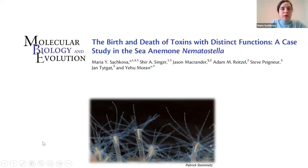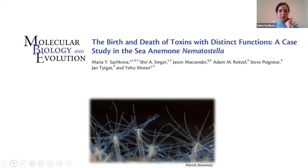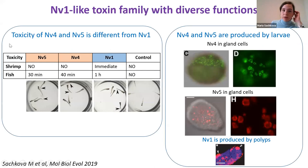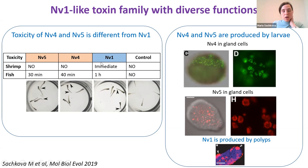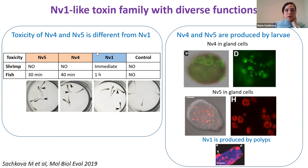I will now talk about several projects I did during my postdoc. The first one is about the mechanism of toxin evolution in this sea anemone. Nematostella has multiple toxins, and one of the major venom components is called NV1. NV1 is produced by ectodermal gland cells and is known to be highly toxic to shrimps — if you inject NV1 into shrimps, they die immediately. If you incubate fish larvae with NV1 toxin, it also affects them within one hour. There are several homologues of this toxin, two of which are called NV5 and NV4.